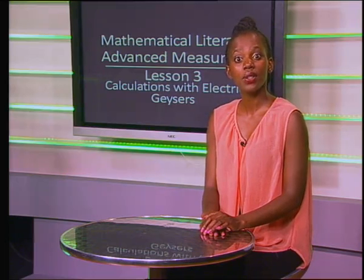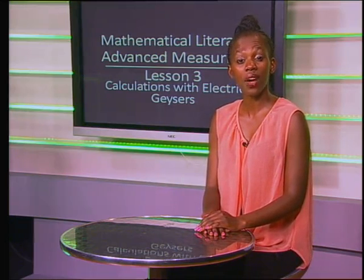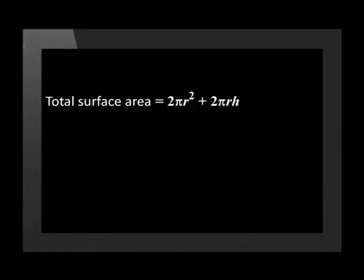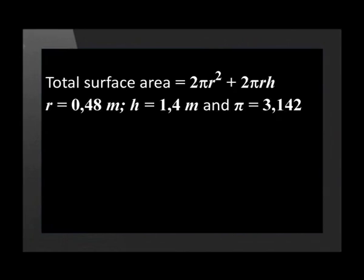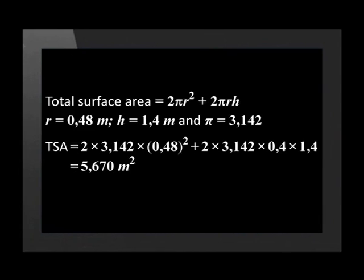Now let us calculate the total surface area of the insulation blanket. We'll use 3.142 as our value for pi and round our answer to the nearest meter, using the total surface area formula for a cylinder. With radius equals 0.48 meters and height equals 1.4 meters, the total surface area is equal to 2 × 3.142 × 0.48² + 2 × 3.142 × 0.48 × 1.4. Using a calculator, we get an answer of 5.670 meters squared.